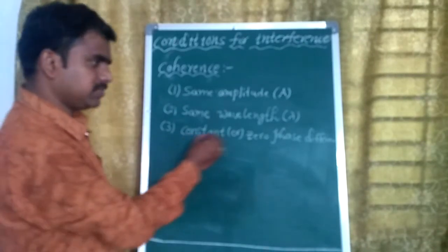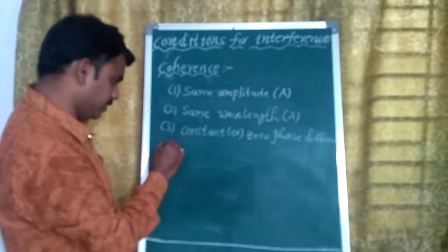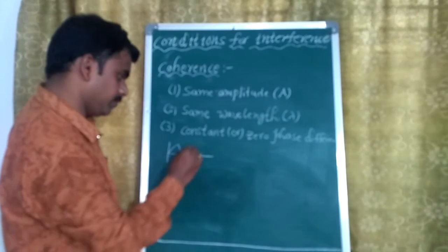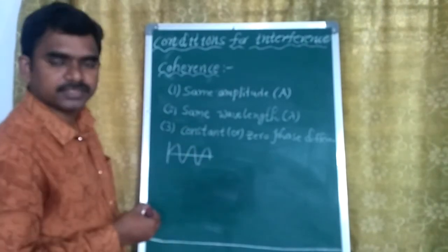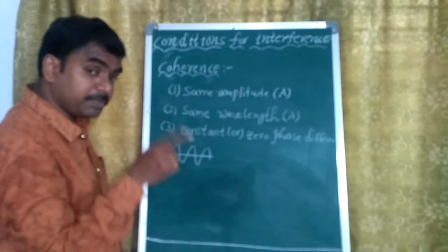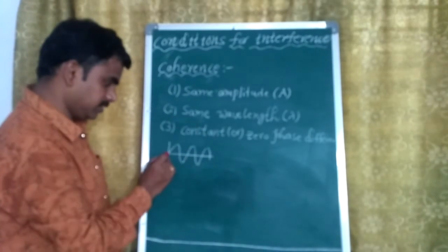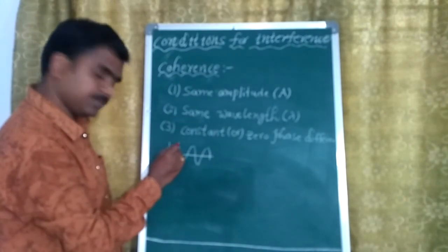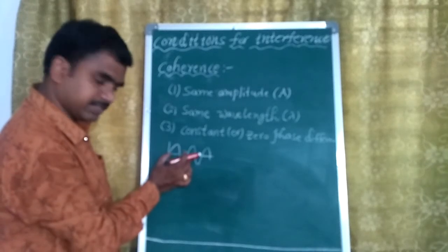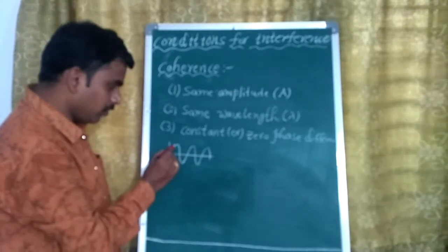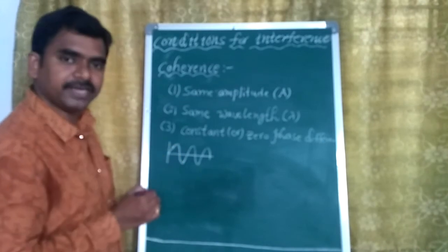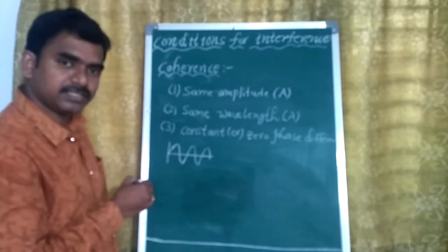Constant phase difference means, suppose this is a first wave. Another wave should have same amplitude and same wavelength, so it should exist like this. Now, if you look here, these both are maintaining the same phase or not?